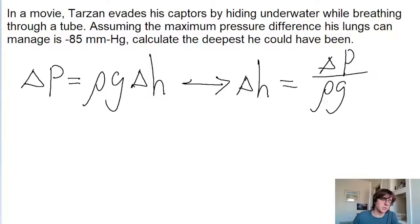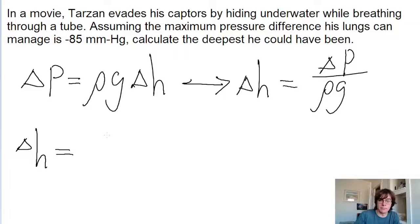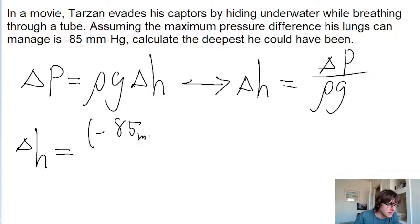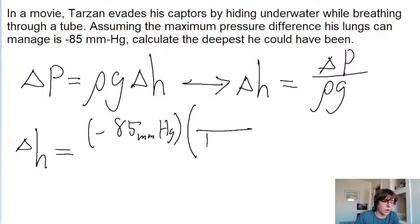That's the equation we use, so we'll just plug in the variables given to us in the problem. The maximum pressure he can withstand is negative 85 millimeters of mercury. Let's convert this into SI units by converting from millimeters of mercury into newtons per meter squared. One millimeter of mercury is equal to 133 newtons per meter squared.